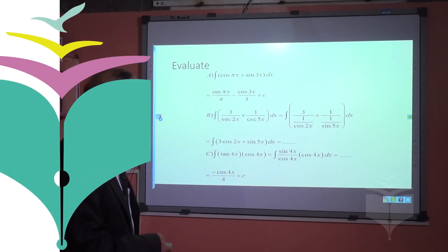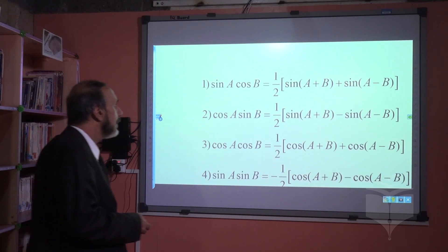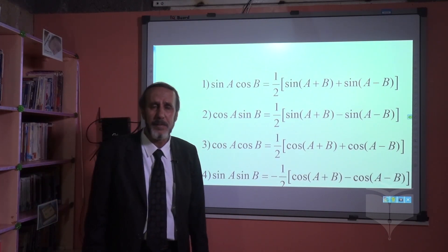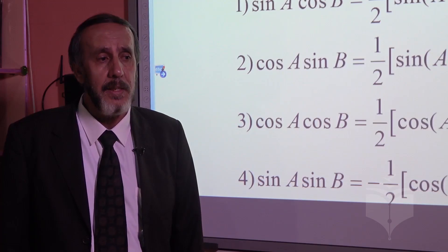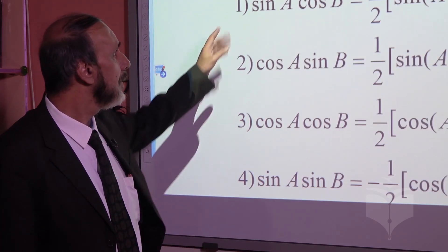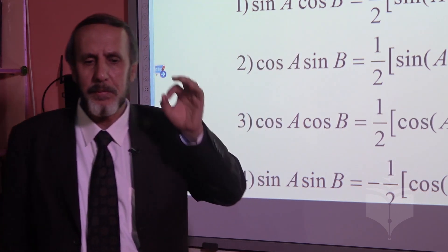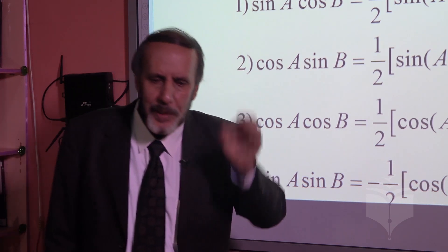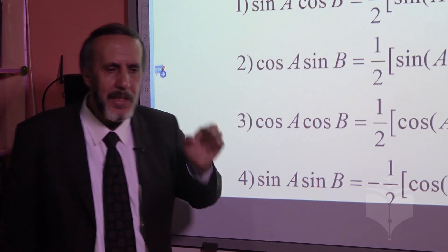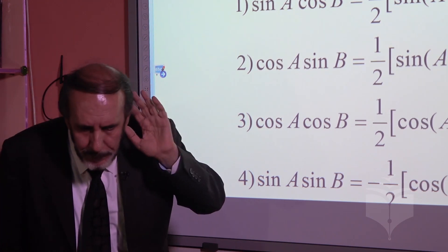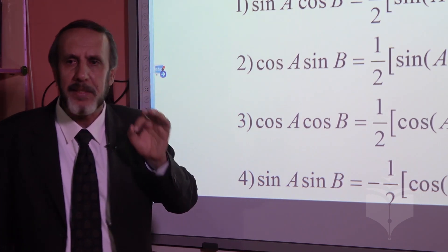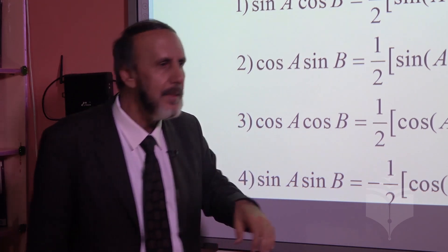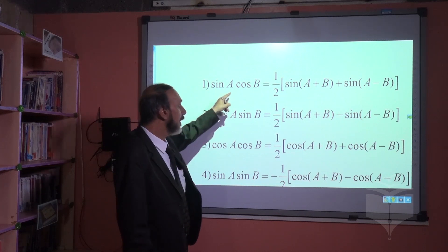Let us see. We took the rules before — we have four rules. We have the multiplication rule we took before. If we have multiplication, we try to change to addition or subtraction. But a limit: we change addition or subtraction to multiplication. Now for multiplication — we have product-to-sum formulas.